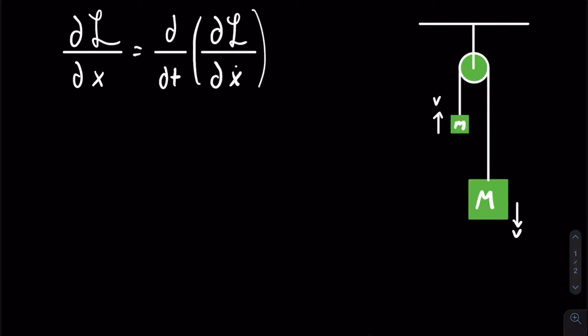So let's get started with our Lagrangian. The first thing we need is the kinetic energy. Because the two masses are connected by a string, we know that the velocity of one mass is going to be equal in magnitude to the velocity of the other mass. This makes our kinetic energy equation pretty simple — it is just going to be equal to one half capital M x-dot squared plus one half lowercase m x-dot squared.